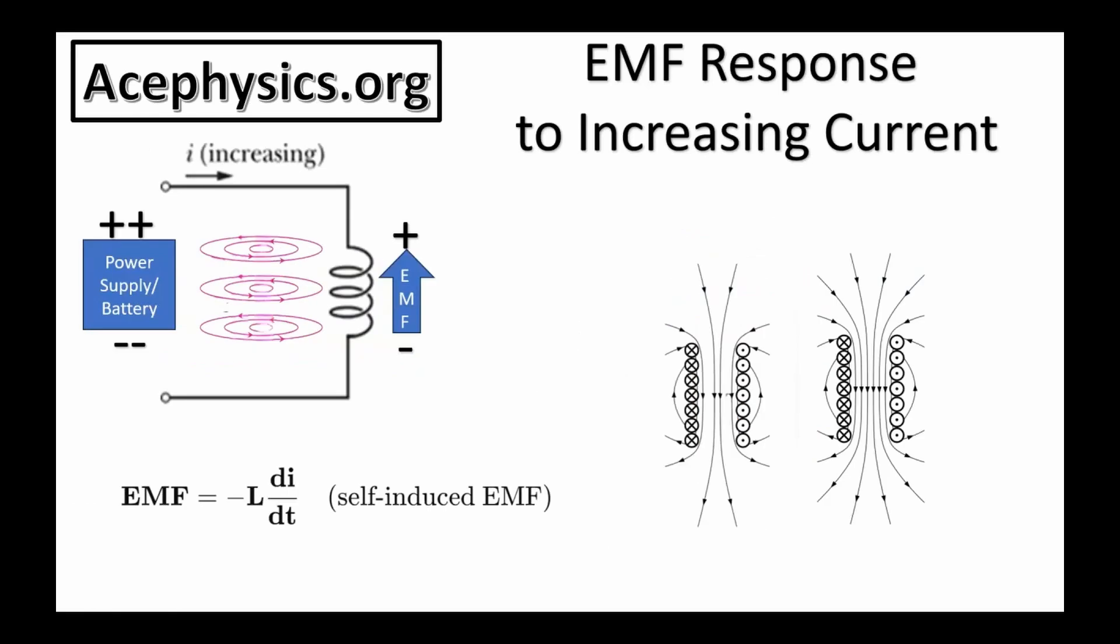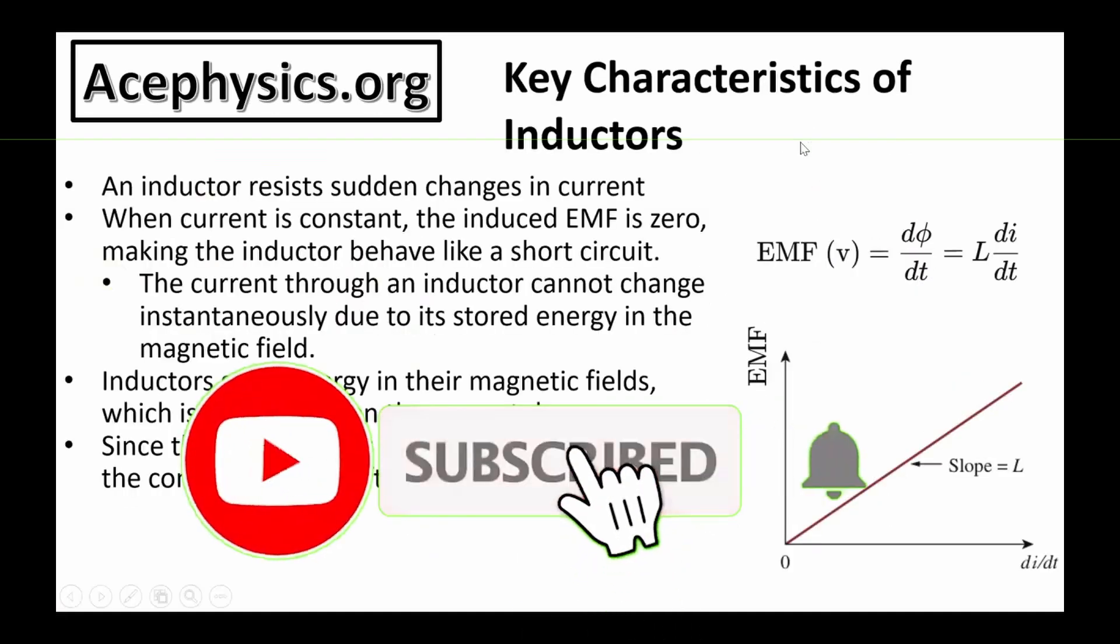When the current through the inductor increases, the back EMF is still induced, but this time it opposes the growing current rather than reinforcing it. And here are some key characteristics of inductors.